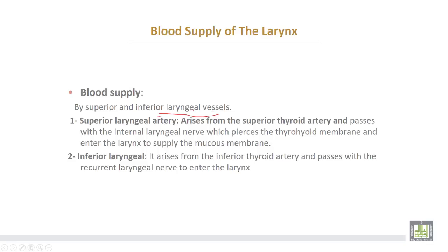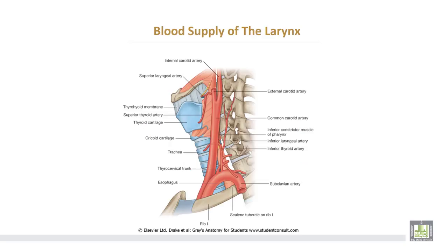The superior laryngeal artery arises from the superior thyroid artery and accompanies the internal laryngeal nerve, which pierces the thyrohyoid membrane to enter the larynx and supply the mucous membrane. The inferior laryngeal artery arises from the inferior thyroid artery and passes with the recurrent laryngeal nerve to enter the larynx. The external carotid artery gives the superior laryngeal, while the subclavian artery gives the inferior laryngeal via the inferior thyroid branch.